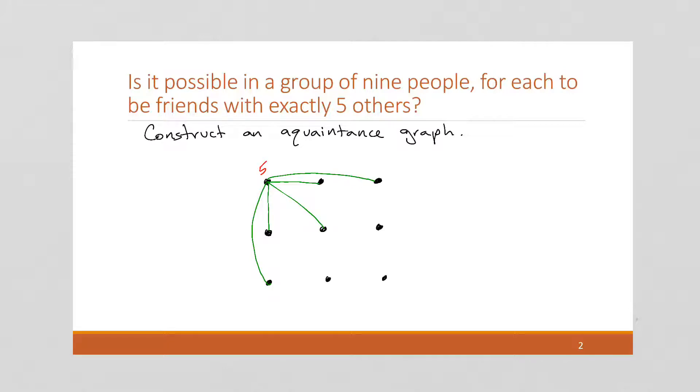One, there's two, three, four, five. So now this middle one has a five acquaintance or degree of five.